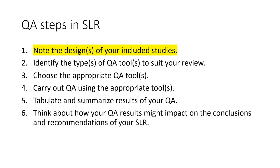For doing quality assessment in a systematic literature review, you will typically go through six steps: first, note the design of your included studies; second, identify the types of QA tools to suit your review; third, choose the appropriate QA tools; fourth, carry out QA using those tools; fifth, tabulate and summarize the QA results; and sixth, think about how your QA results might impact the conclusions and recommendations of your review.